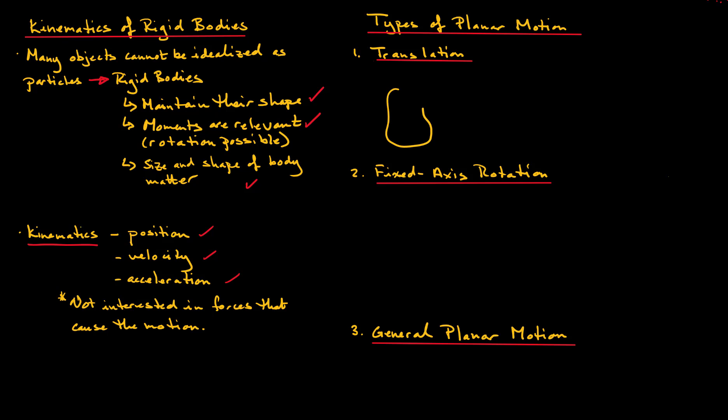So we have our random bean-shaped object here and it moves to this location here at time t plus delta t. We could have two points in here, we could call this point A and point B. And again, these are the same points on the same body, point A and point B. And the object has undergone translation.